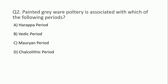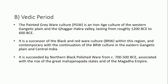Second question: Painted graveyard pottery is associated with which of the following periods? Pottery से किस period का अंदाजा लगाया जाता है - carbon dating से पता करते हैं कि ये pottery किस period से associated थी। Options are: A) Harappa period, B) Vedic period, C) Mauryan period, D) Chalcolithic period. इसका answer है Vedic period।